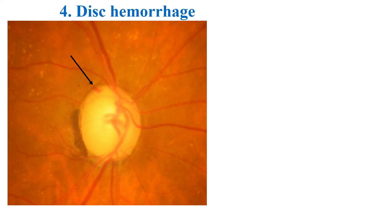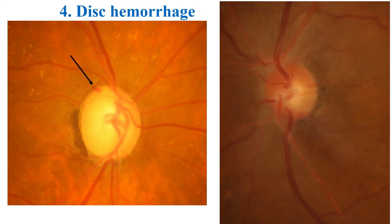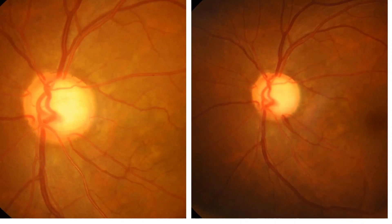Disc hemorrhages are splinter or flame-shaped hemorrhages oriented perpendicular to the optic disc margin. Classically, these hemorrhages are located in the pre-laminar optic disc, cross the peripapillary zone and extend into the adjacent superficial retinal nerve fiber layer, although they may not occupy the entire length from disc to retina. Deeper disc hemorrhages may appear round and blotchy. Optic disc hemorrhage is often associated with neuro-retinal rim notching at the site of bleeding and predicts the site of RNFL defect.